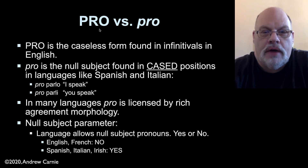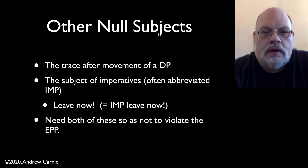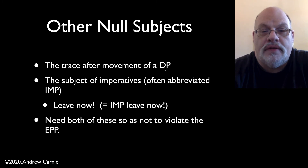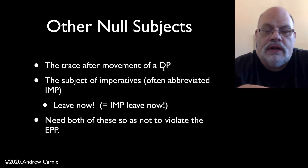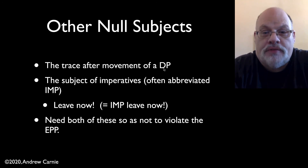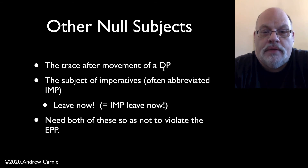So that's Big Pro and Little Pro or Baby Pro. We also have two other situations where we have null items in subject position. The first case is the situation where you have a trace after you've moved the DP — either you've moved the DP to get case or you've moved it for WH movement. At that point, there's still a trace in the specifier of the TP position, and that trace satisfies the EPP as well.